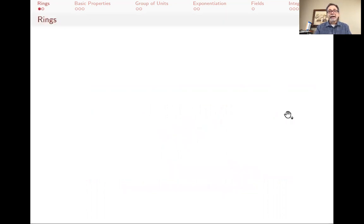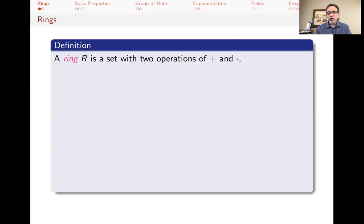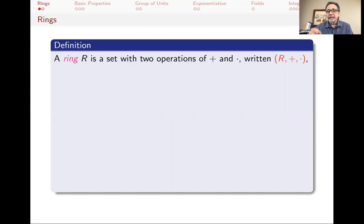Let's get started by defining what rings are. A ring is a set with two operations: addition and multiplication. We don't know what the elements of the set are, but we do know that there are two operations — by operations we mean we can take two elements, do the operation, and get a third element from the set. We call those operations plus and times, and we write this as R with plus and times. The R is the set of elements, and if the operations have other names, we would put those instead.